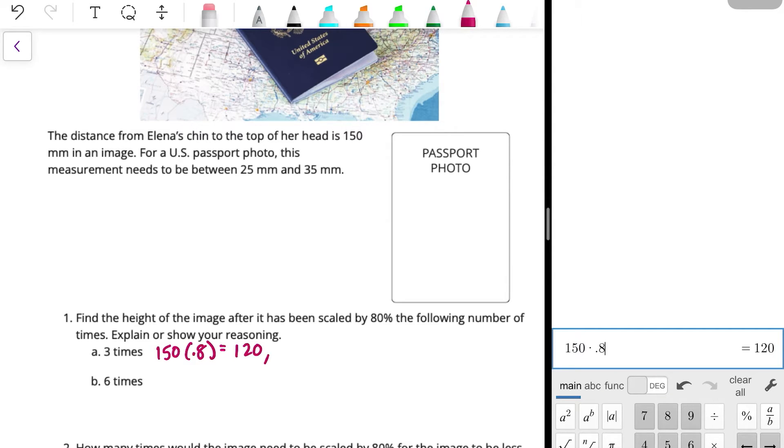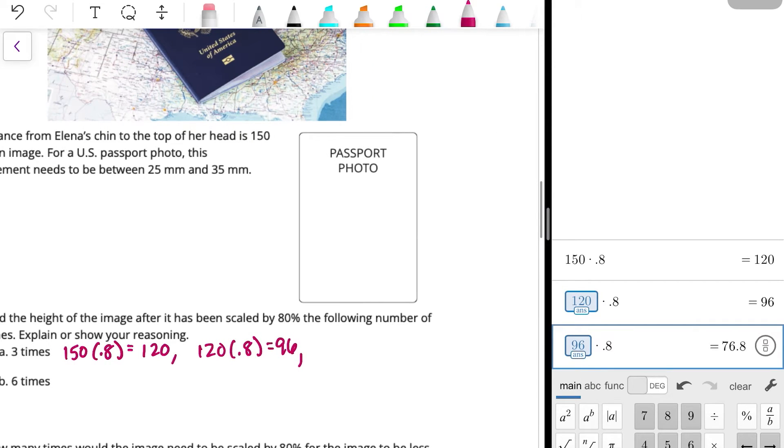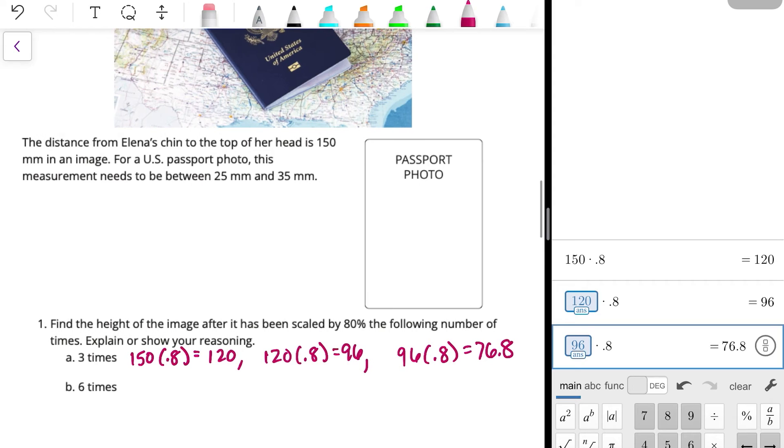So that's the first time. Then we're going to take that answer and multiply by 0.8. So then 120 times 80% is 96. And then we'll do that one more time. So times 0.8. So 96 times 80% would give us 76.8 millimeters, and that is still too big for the passport.